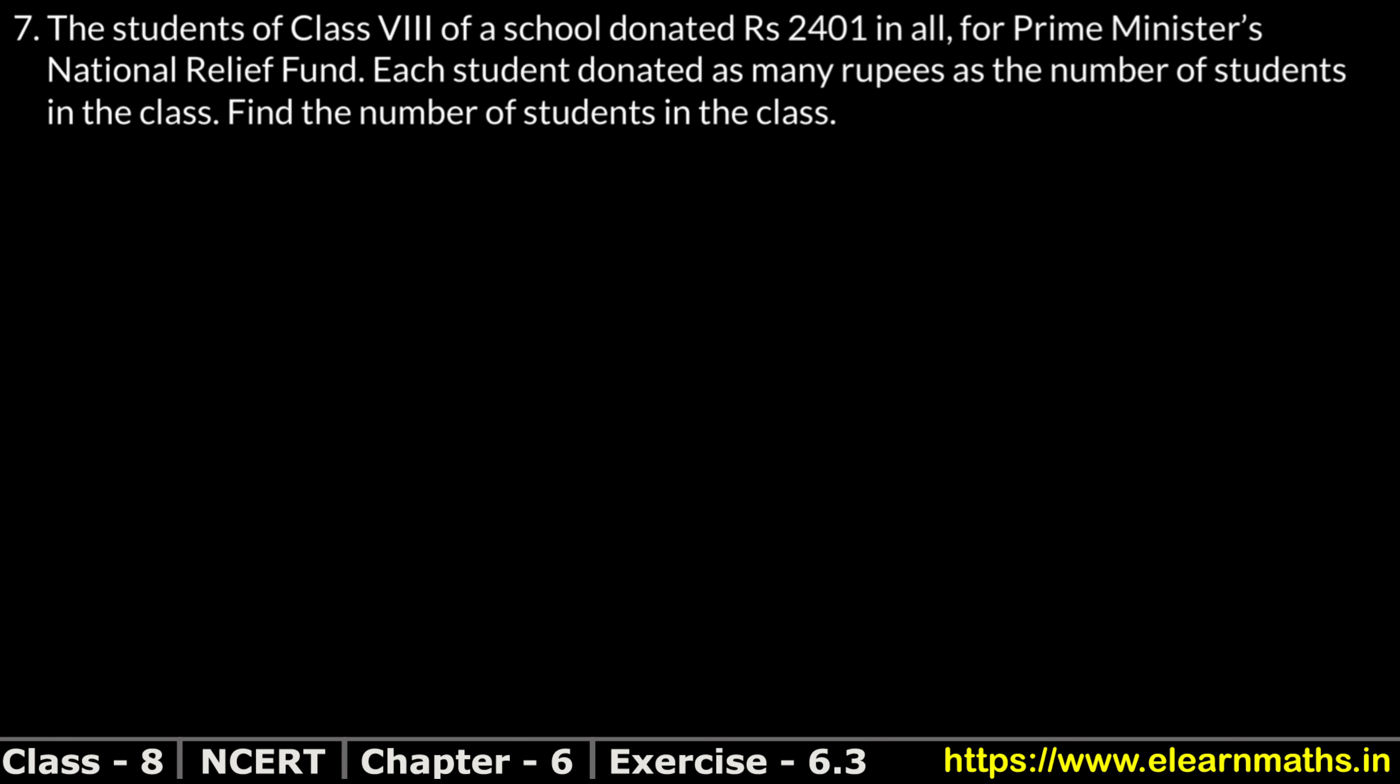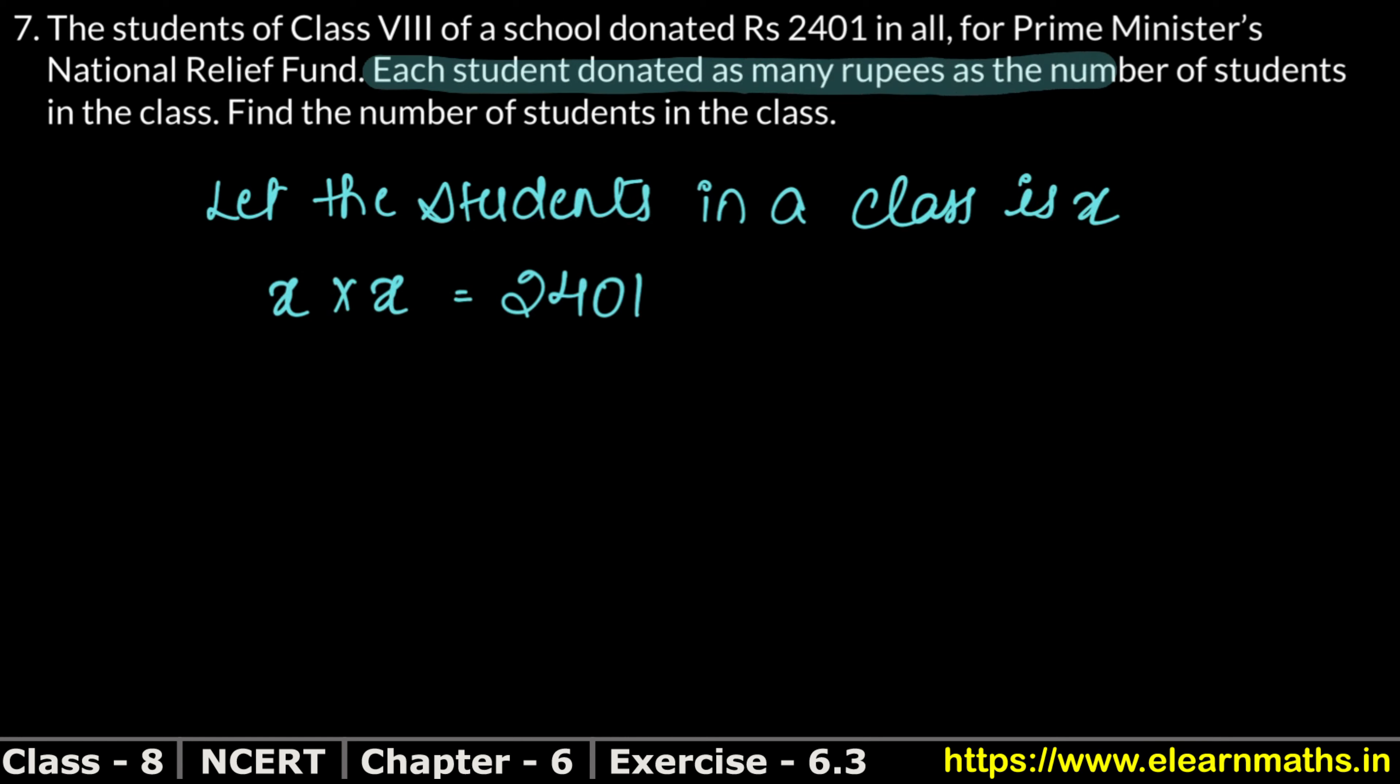We have to find the number of students. The students donated as much as the number of students in the class. If students are x, each student donated x times. Let the students in a class be x. So x students donated x number of times, so total rupees is 2401. Each student donated as many rupees as the number of students.